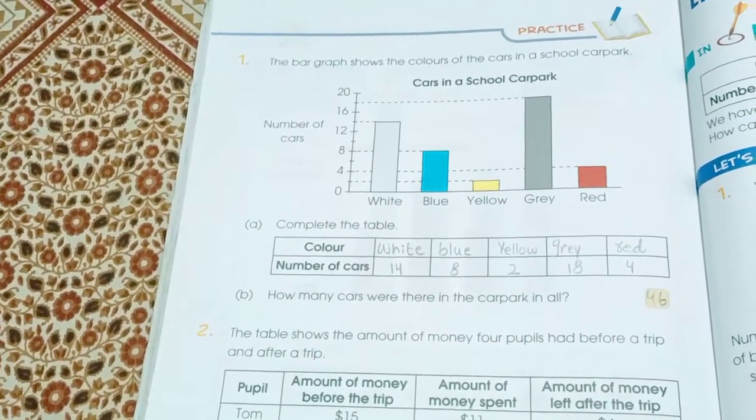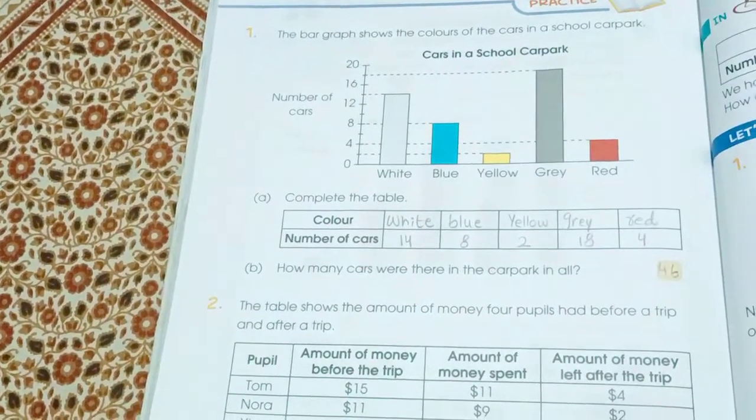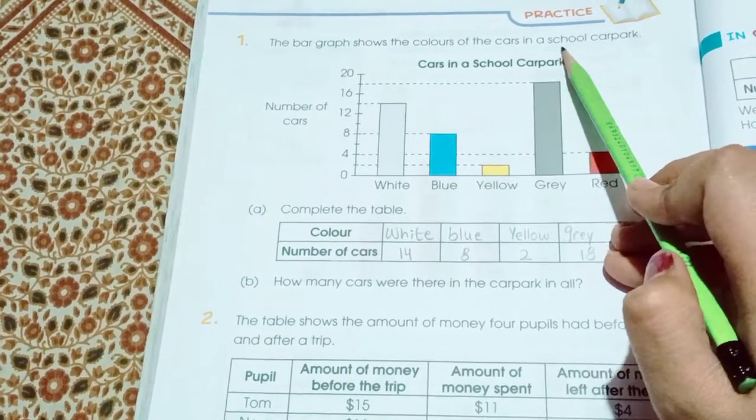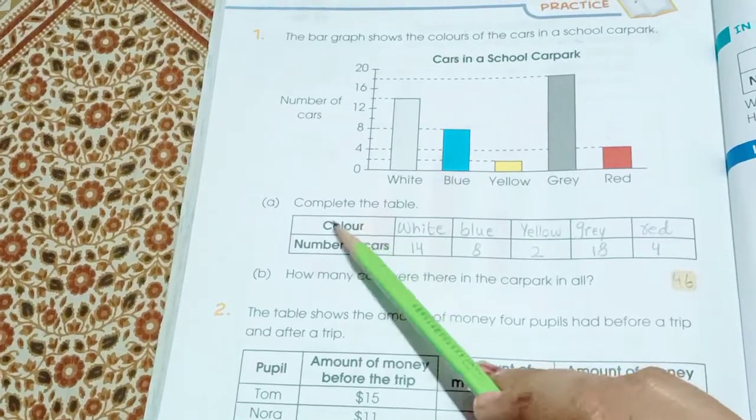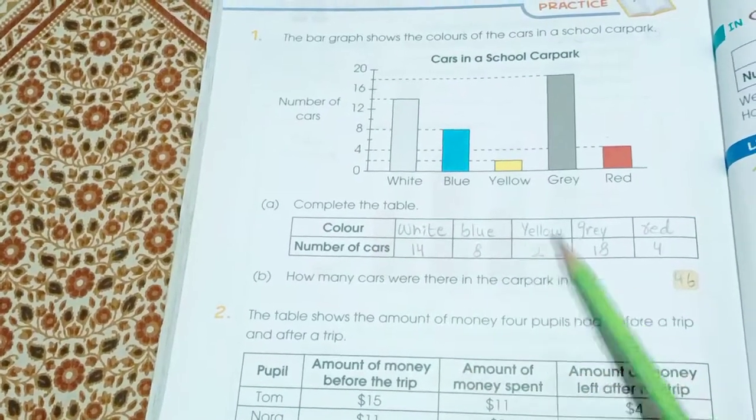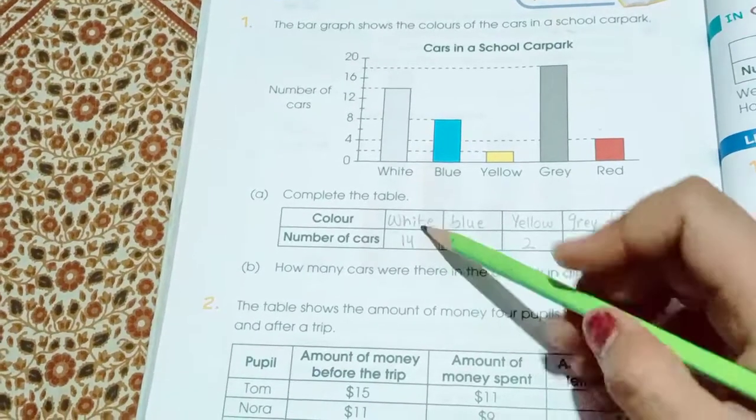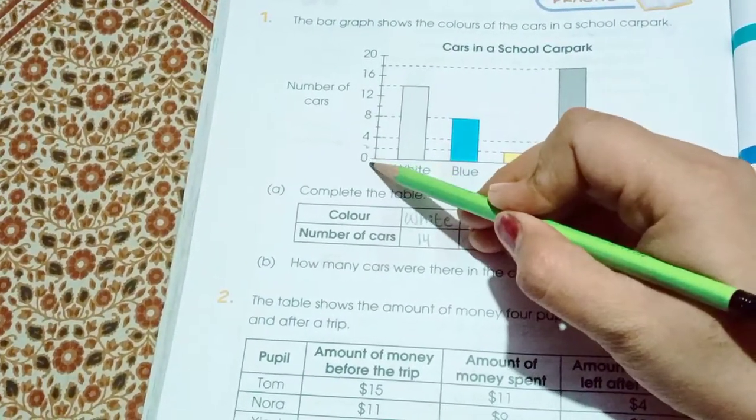Page number 239, practice. Question number 1: The bar graph shows the color of the cars in the school car parking. Here are the colors of the car and here are the numbers. So first we have to write the colors: white, blue, yellow, grey and red. And the numbers. White cars, we have the difference between the number 2.